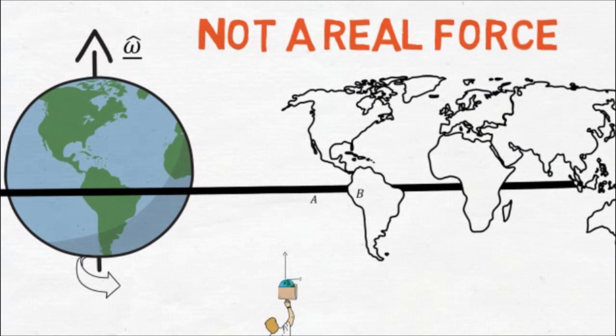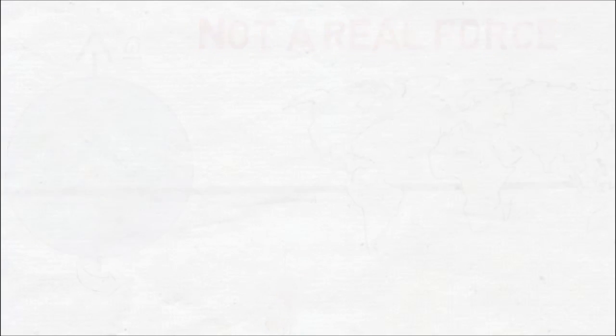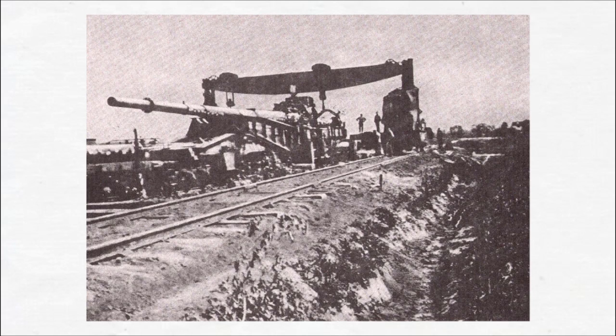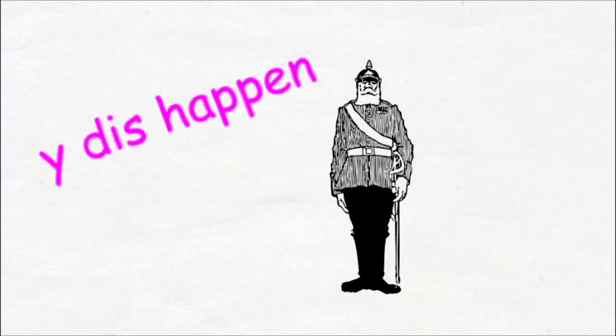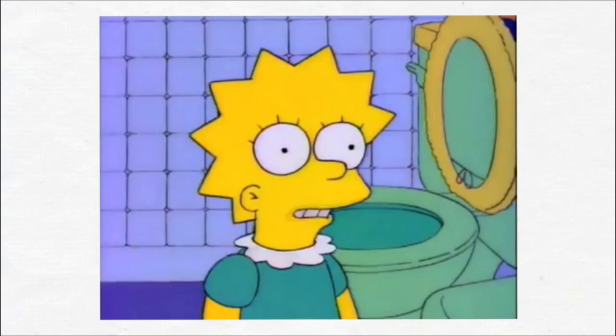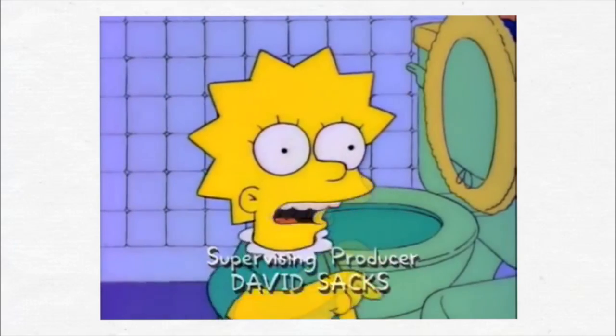By using a similar example, we could show that the data would be deflected to the right in the Northern Hemisphere, which explains why the shells from the Paris gun in World War I always fell around 1,300 metres right of the original target. Well, as Lisa puts it, in the Northern Hemisphere, water always drains counterclockwise.